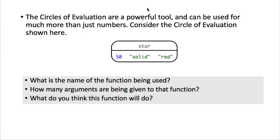But circles of evaluation can be used for more than just numbers. Let's look at this one here. So this is something where the operation is called star, and it works on 50, solid, and red. So what do you think that's going to do? Think about that. Let's look and see.